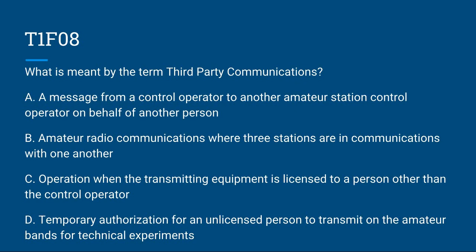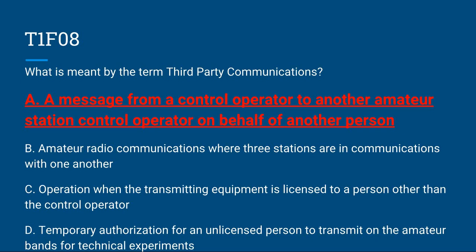T1F08: What is meant by the term third-party communications? A. A message from a control operator to another amateur station control operator on behalf of another person. B. Amateur radio communications where three stations are in communications with each other. C. Operation when the transmitting equipment is licensed to a person other than the control operator. Or D. Temporary authorization for an unlicensed person to transmit on amateur bands for technical experiments. Correct answer is A: a message from a control operator to another amateur station control operator on behalf of another person.